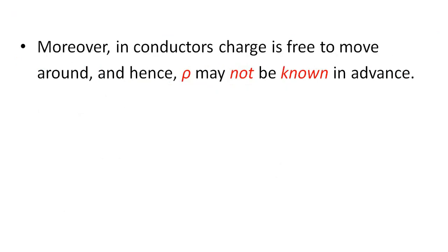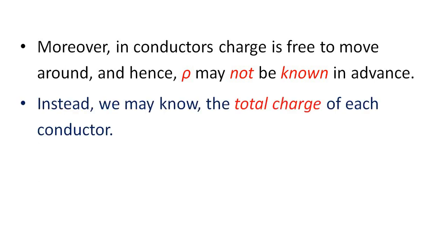Moreover, in conductors, charge is free to move around and hence ρ may not be known in advance. Instead, we may know only the total charge of each conductor. Conductors have free electrons that have freedom to move throughout the conductor.